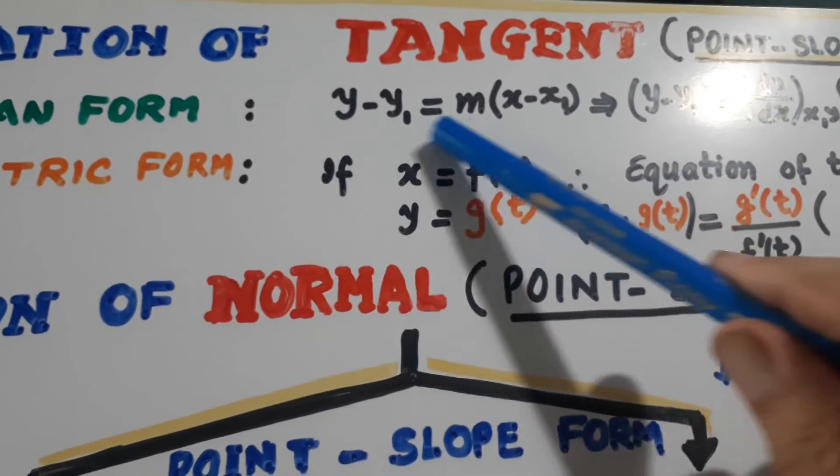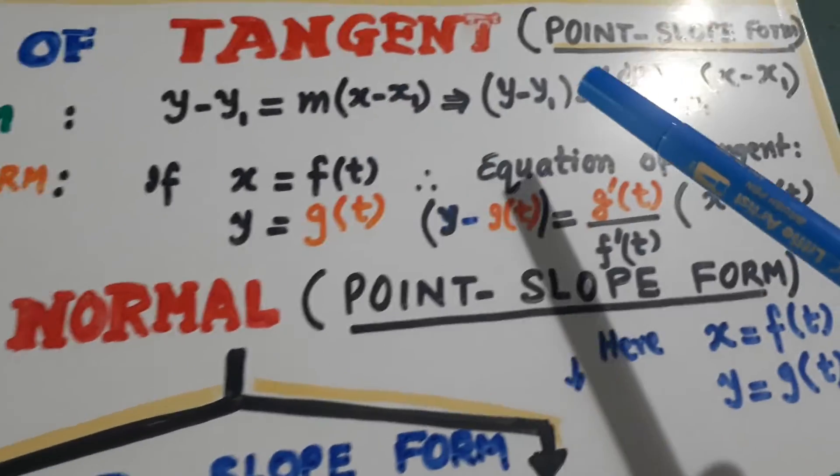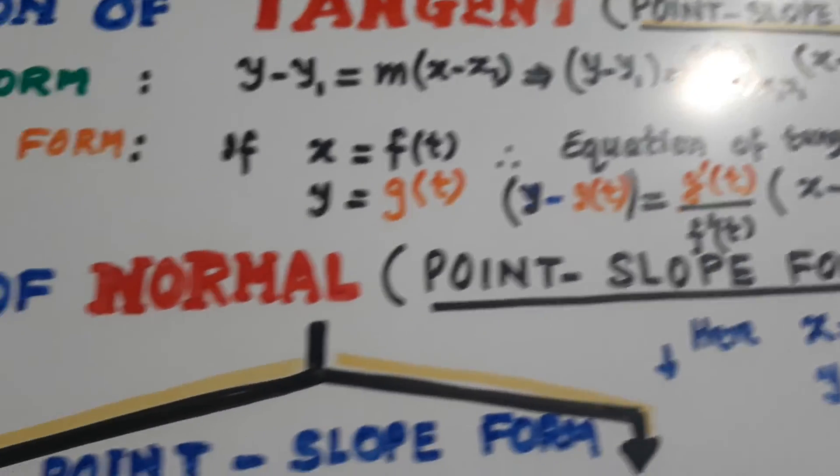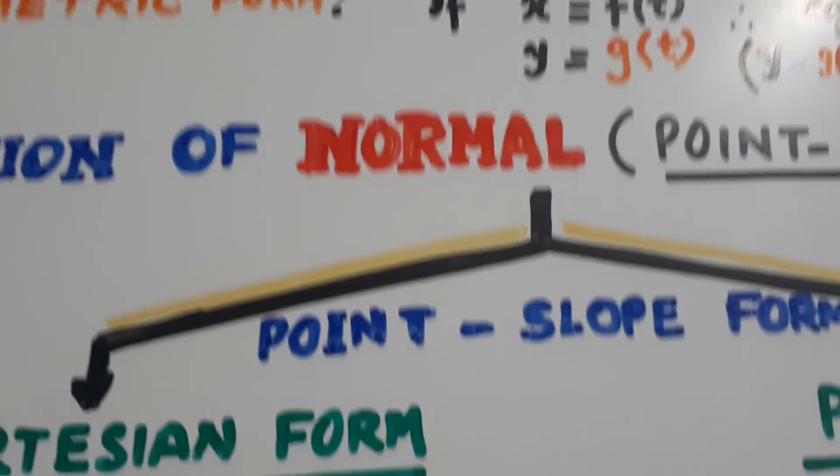We have to remember the old equation which was done in class 11th. So instead of m, only you have to put dy by dx at the point (x1, y1). So this is what all it is. This is the concept part.